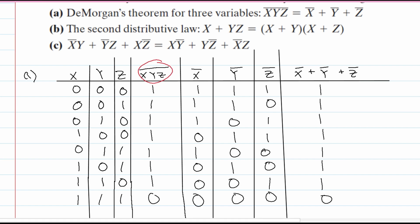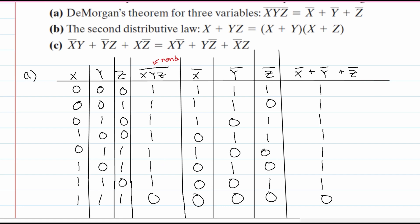The first part — the NOT over x, y, and z — you can think of it as a NAND, representing an AND gate with the NOT of it. These would represent a NOR, which is the NOT of our OR. We have essentially proven part A, because we've shown that this NAND is equal to this NOT-OR.